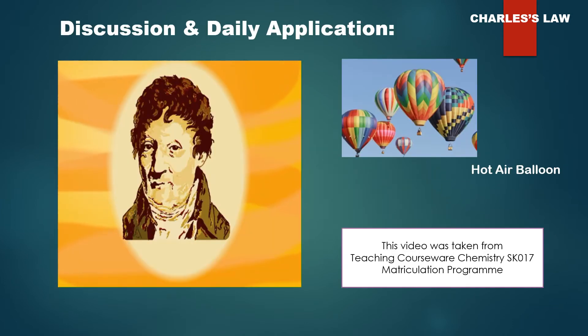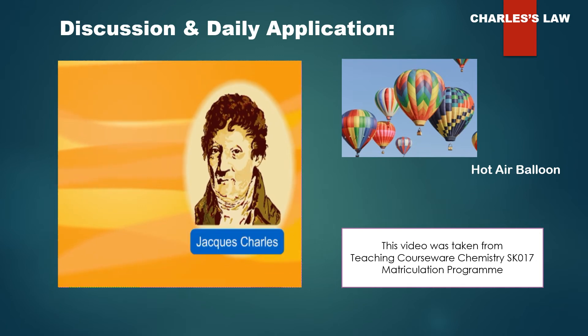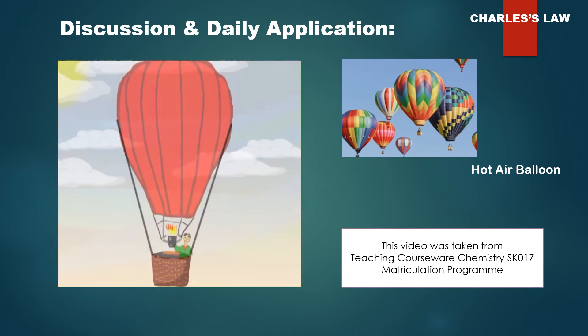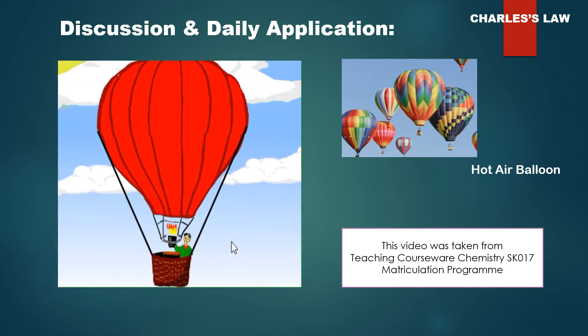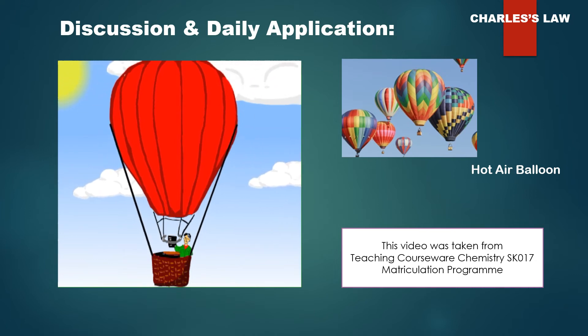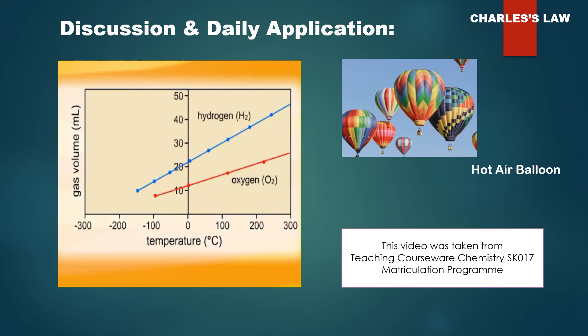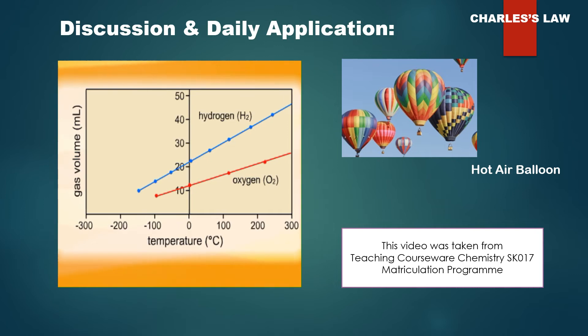In 1787, French scientist Jacques Charles observed that a fixed quantity of gas under a constant pressure changes its volume with the temperature. When the gas was heated, the volume increased. When it was cooled, the volume decreased. The graphs illustrating this relationship were straight lines. Extension of these lines to lower temperatures made them all cross at one point at zero volume.